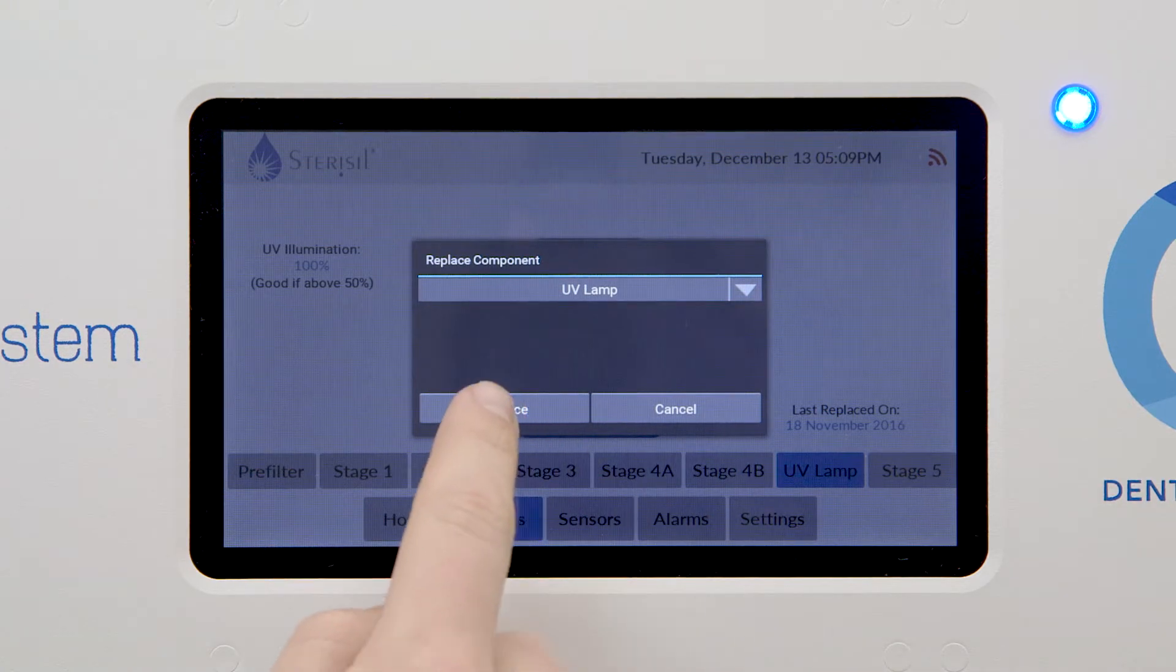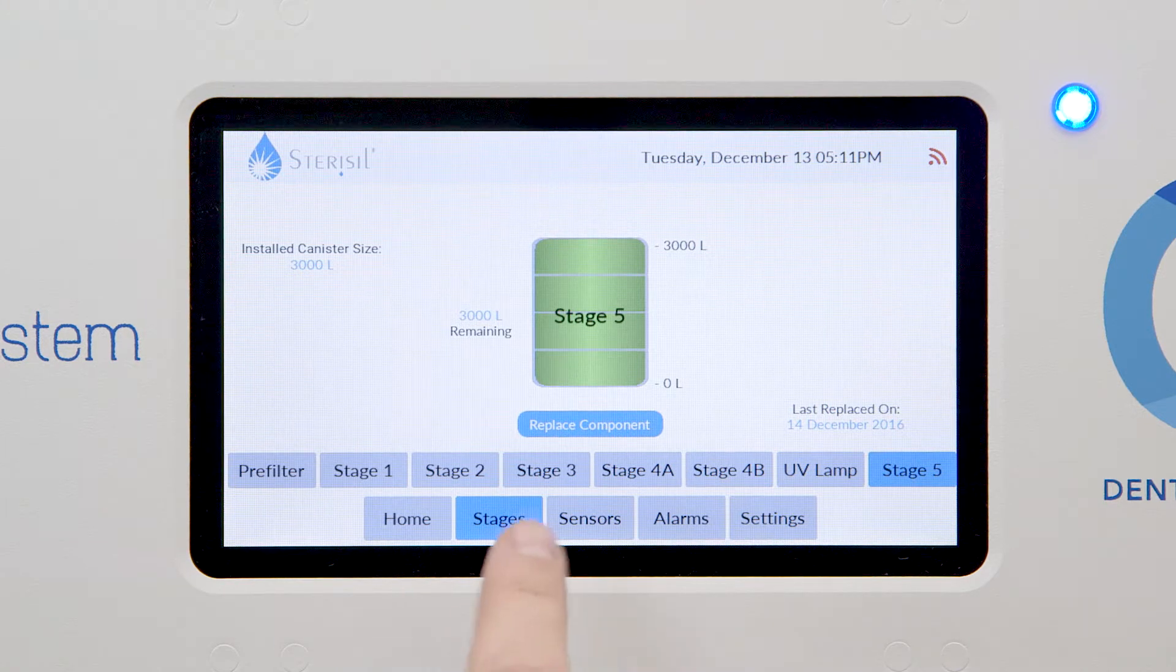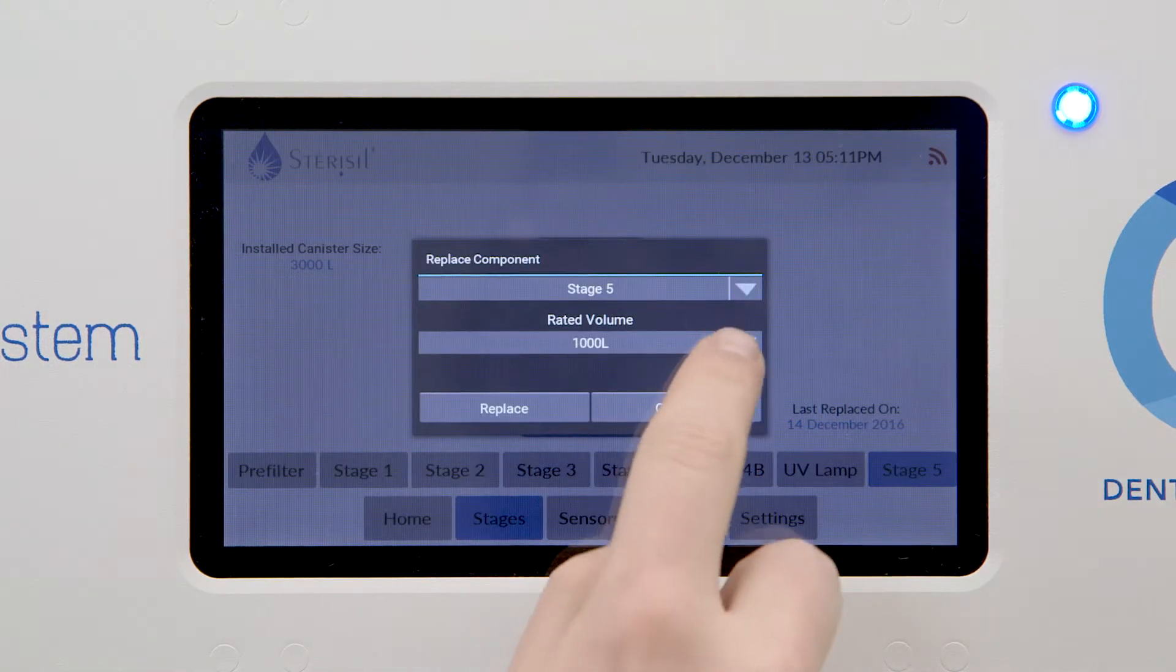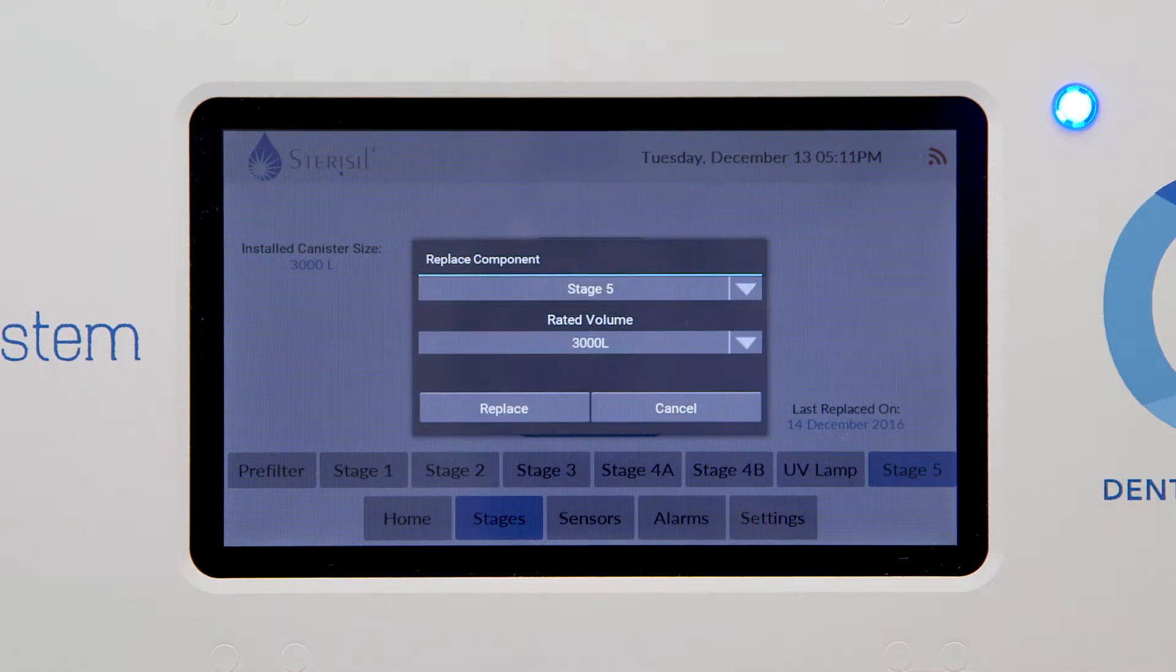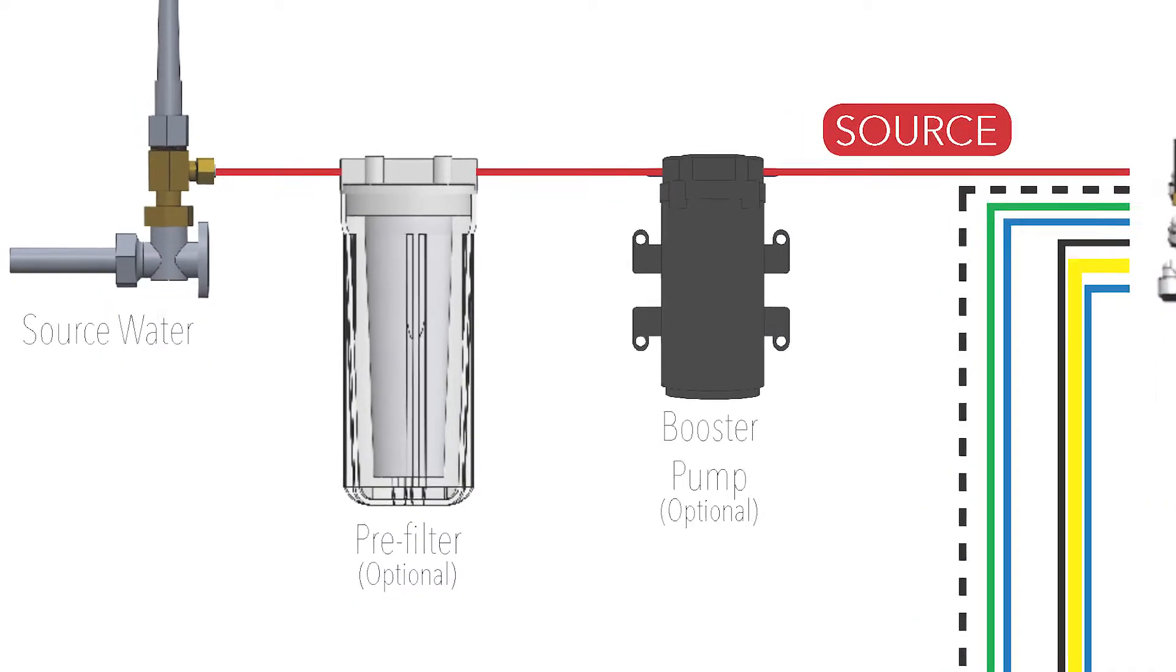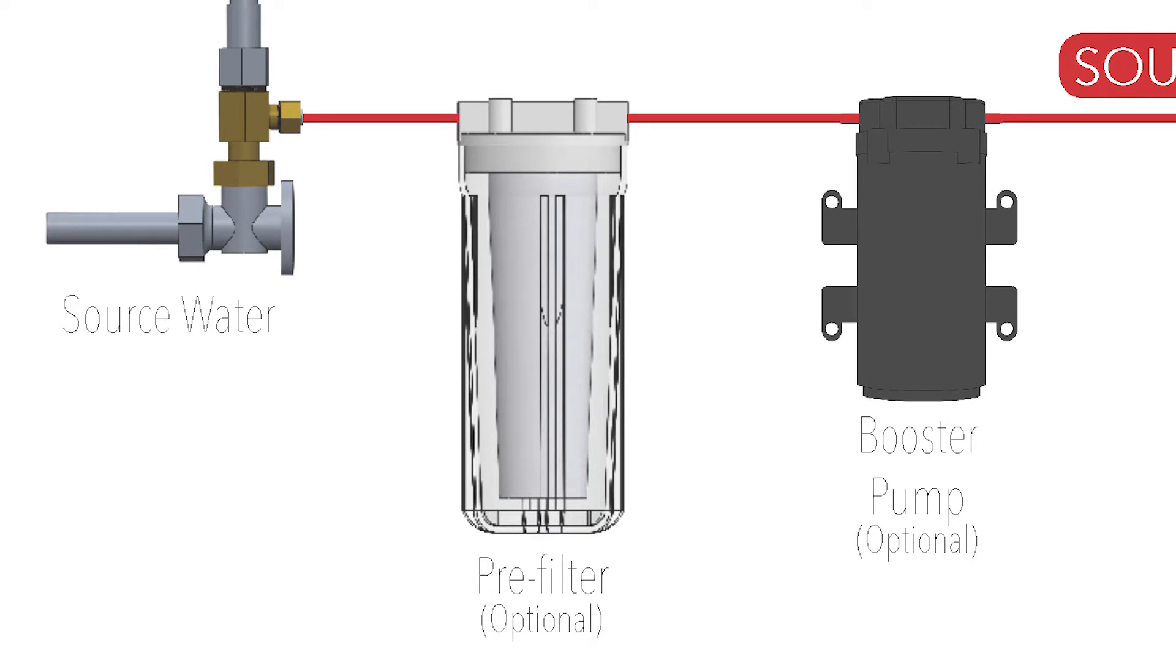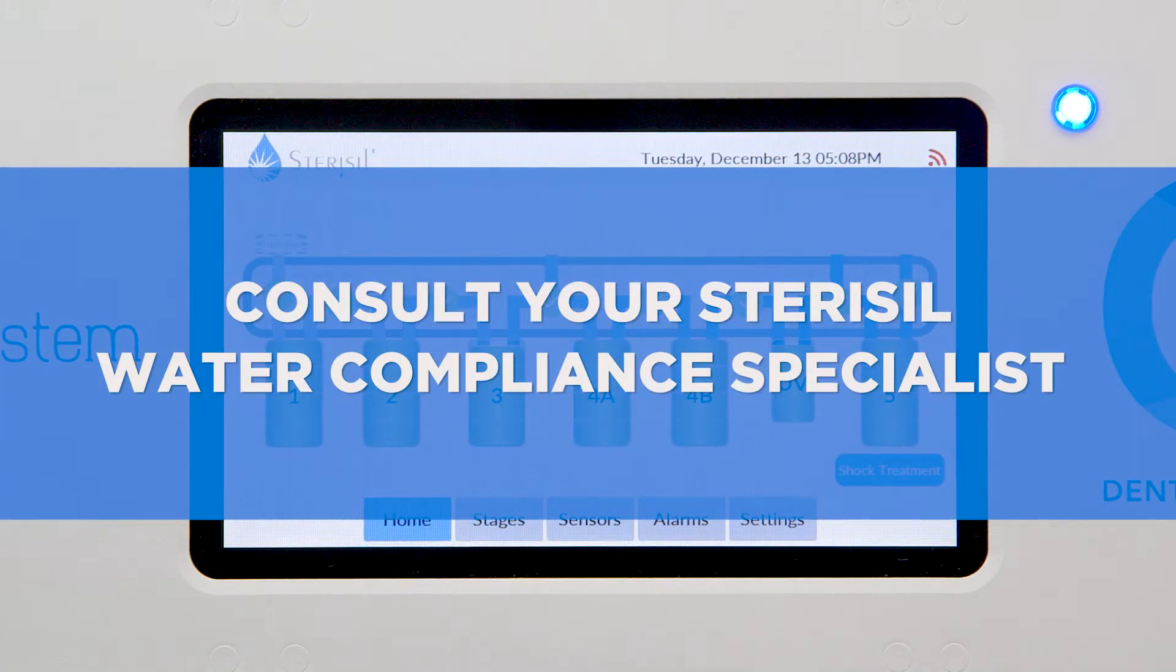Stage five's lifespan is based on a liter count. Each stage five is marked with its liter capacity. From the stage five details screen, verify that your maximum capacity matches the capacity printed on the cartridge. If not, reset the count to the correct number. If your configuration includes an optional pre-filter, you'll need to set the reminder for the appropriate interval. Please consult your Sterisol water compliance specialist to confirm your replacement interval.